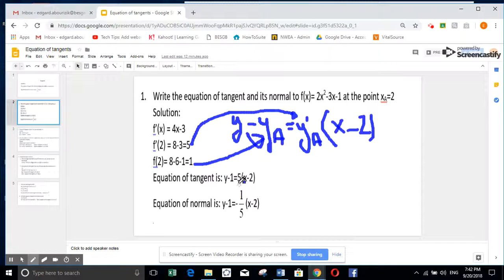And that of normal, instead of writing 5, I write it inverse and opposite sign because they are perpendicular. The tangent and its normal. So it will be minus 1 over 5.